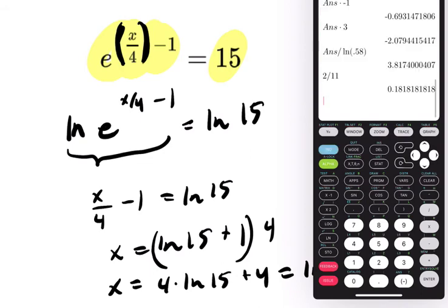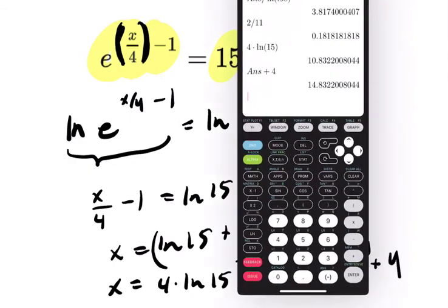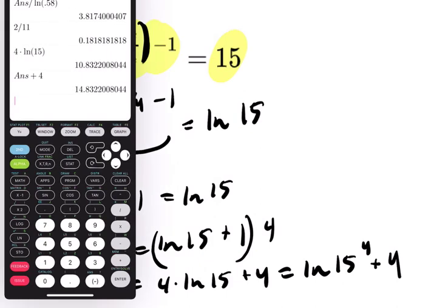So get added there. All right. 4 times the natural log of 15. Boom. Plus 4. Boom. So about 14.832. And you can see the natural log of 15 to the 4th.